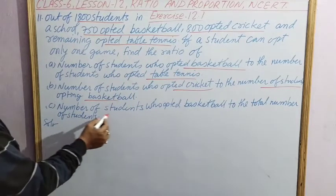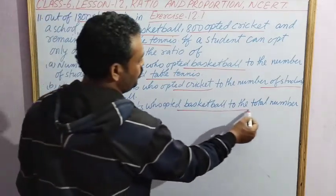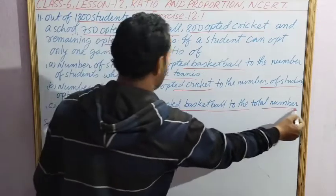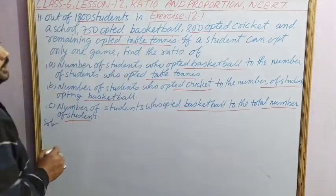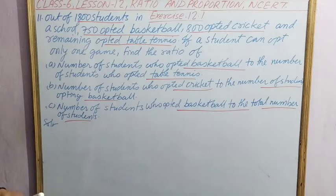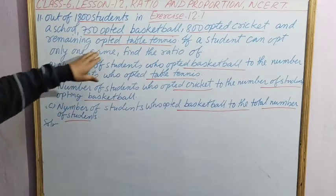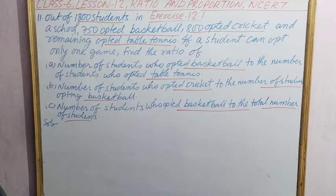And third one, number of students who opted basketball to the total number of students. So first thing, we have to find how many students opted table tennis.